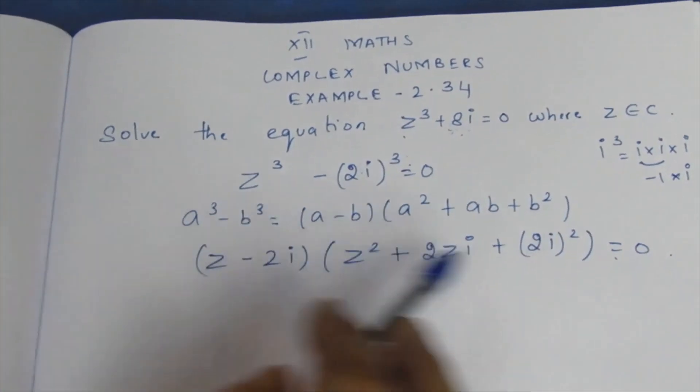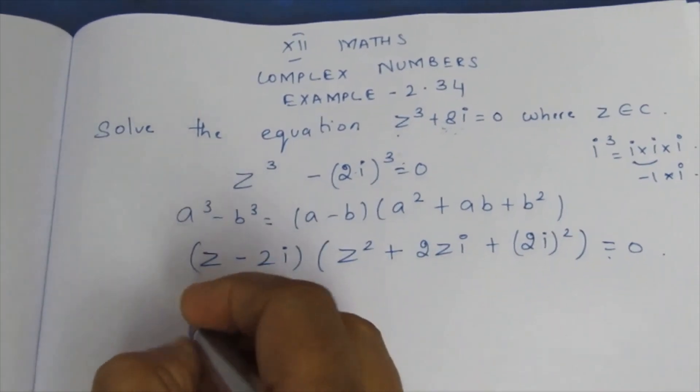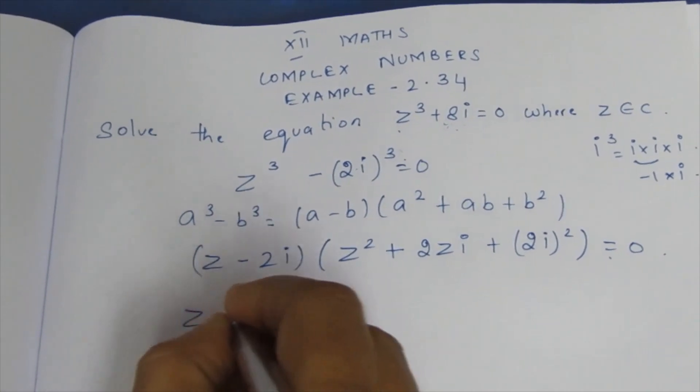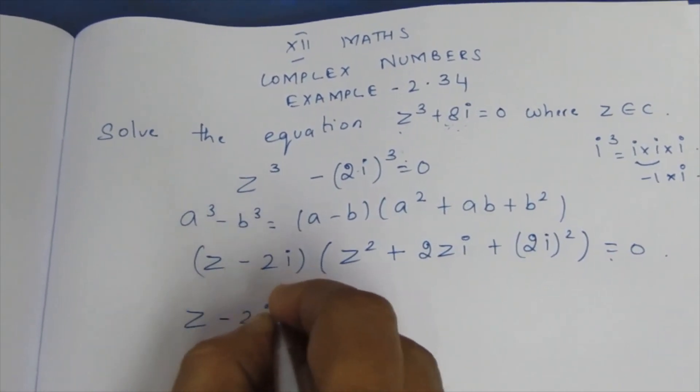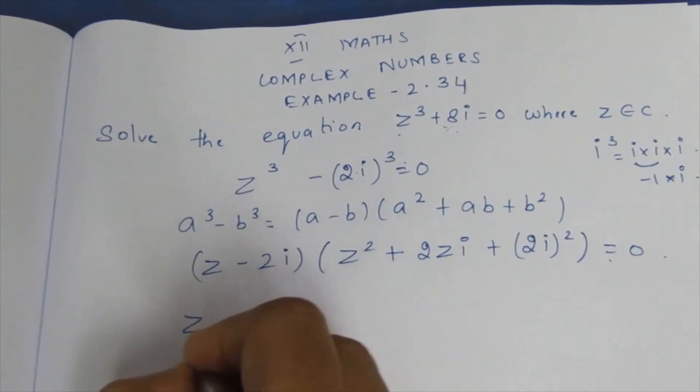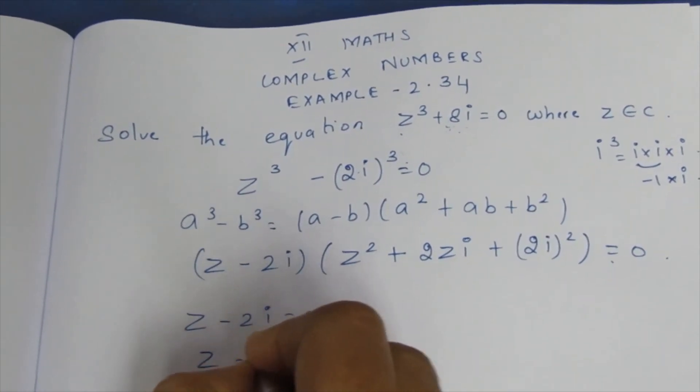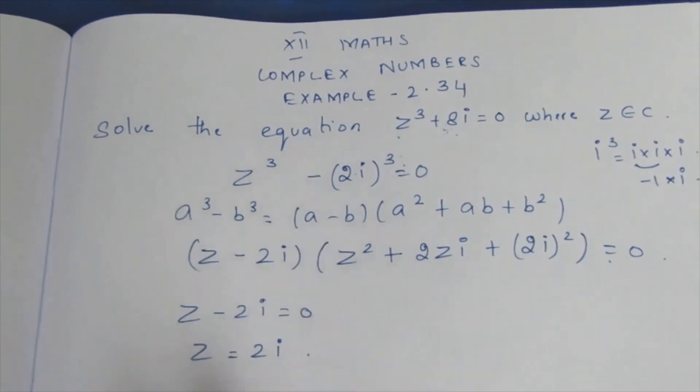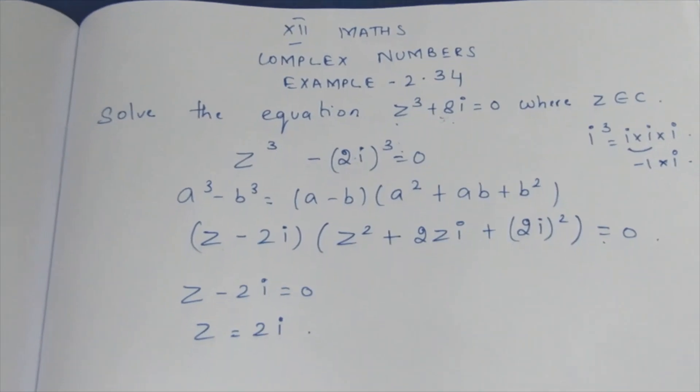Setting the first factor to zero: Z - 2i = 0, so Z = 2i. Now we solve the other factor on the other side of the question.